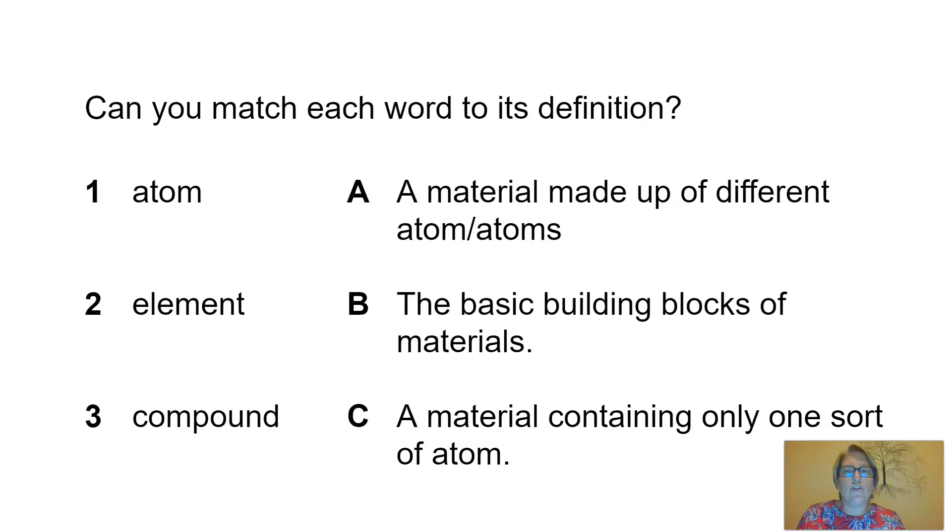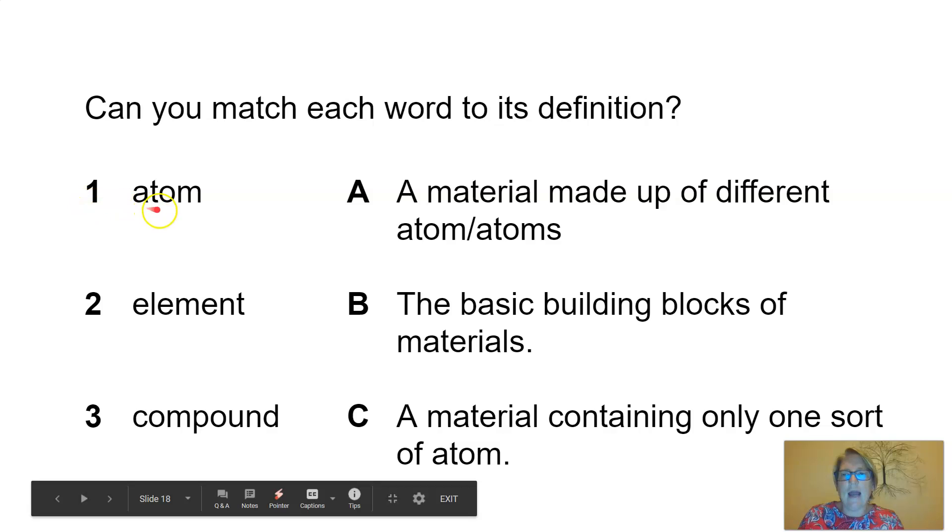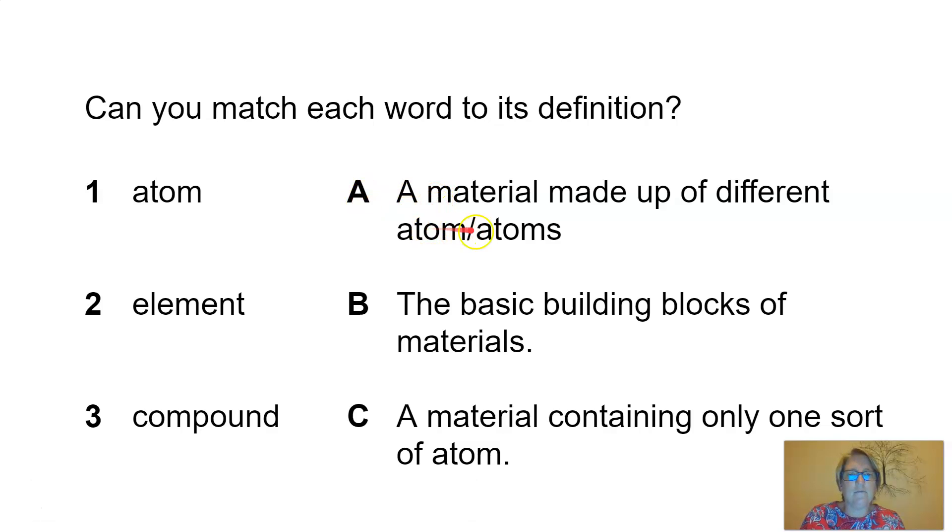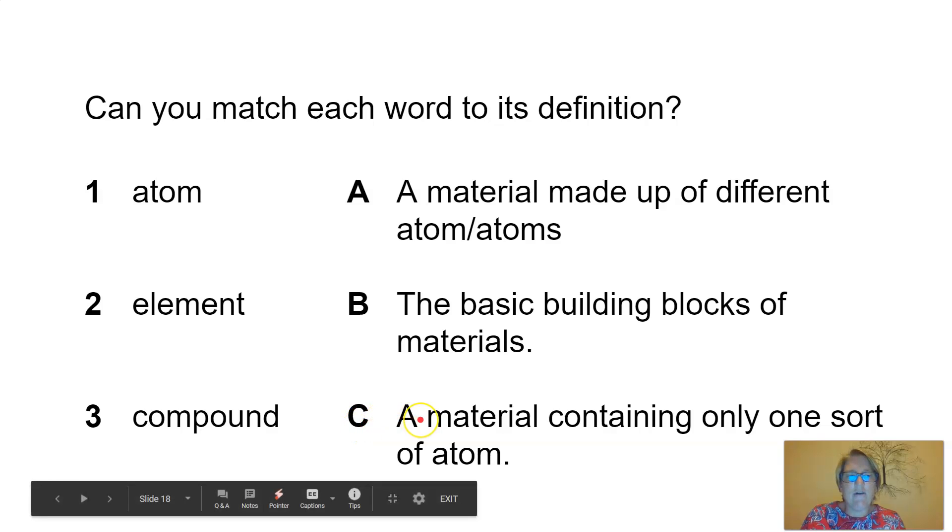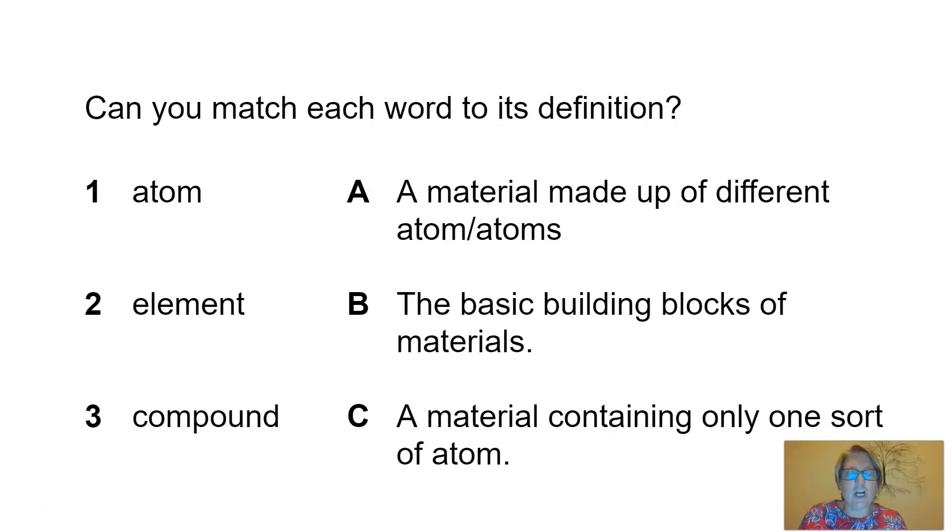Can you match each word to its definition? We have one: atom, two: element, three: compound. A, a material made up of different atoms. B, the basic building block of materials. Or C, a material containing only one sort of atom. I'll pause for a moment while you try and do these matching columns. If you need longer, you can pause the screen.